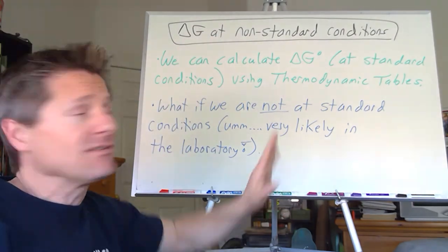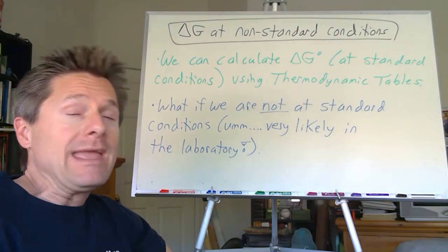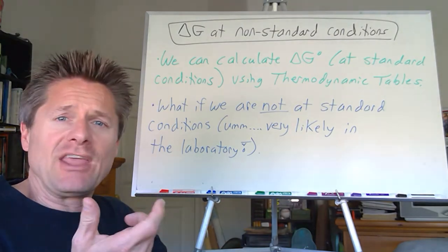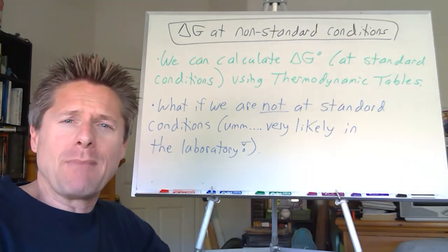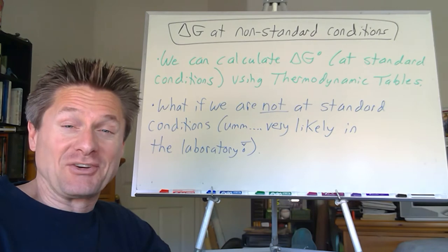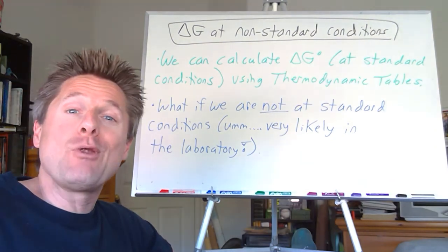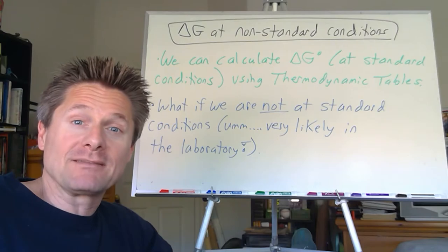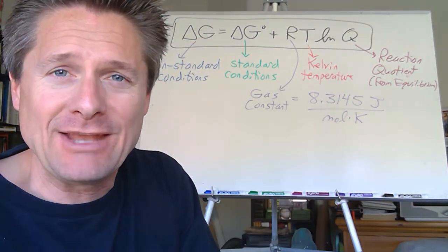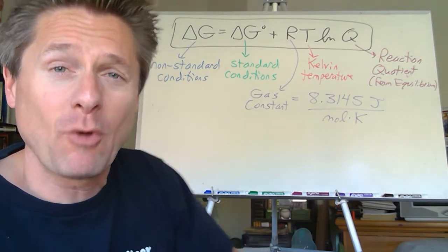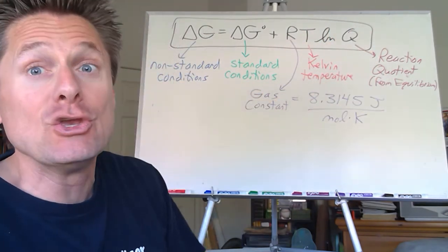So if we're at non-standard conditions — notice you don't have that little circle on top, that naught symbol is not there — what do we do? That's the purpose of this video. In essence, we're just going to take delta G, Gibbs energy at standard conditions, which we know how to calculate, and then add a correction factor. It's a mathematically derived equation. I'm just going to write it up on the board. If we want delta G at non-standard conditions, we take delta G at standard conditions and add this RT ln Q correction factor.